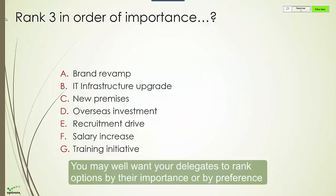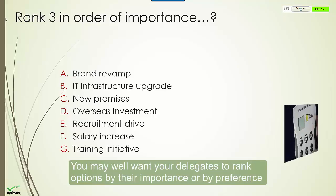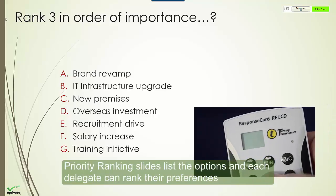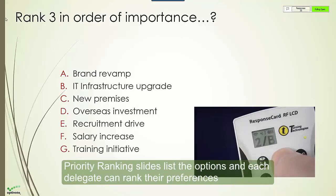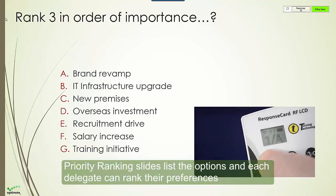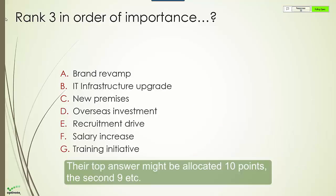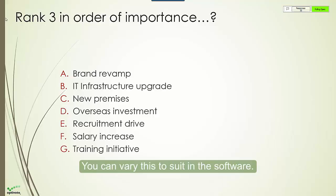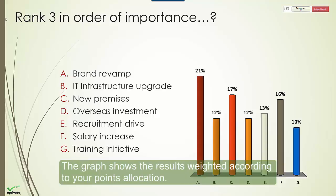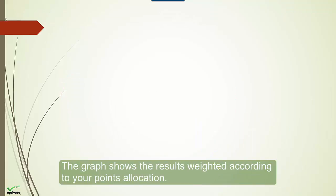You may well want your delegates to rank options by their importance or by preference. Priority ranking slides list the options, and each delegate can rank their preferences. The top answer might be allocated 10 points, the second 9, etc. You can vary this to suit in the software. The graph shows the results weighted according to your points allocation.